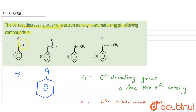Now if we consider the first compound, we have C double bond O and H — an aldehyde group. Oxygen is an electronegative atom, so it will pull electrons towards itself, making the carbon electron deficient (δ+). This electron deficient carbon will then pull electrons from the benzene ring, deactivating it and decreasing the electron density.